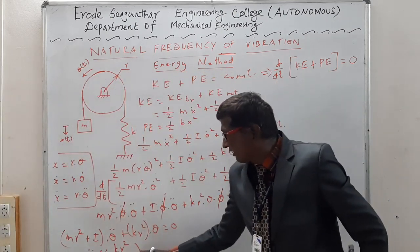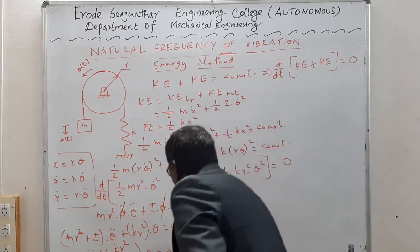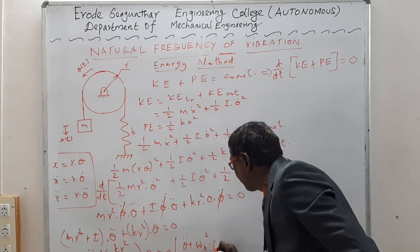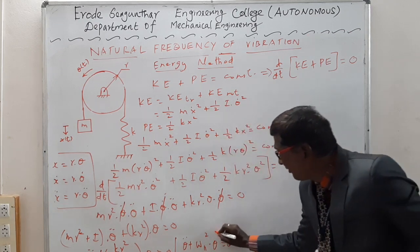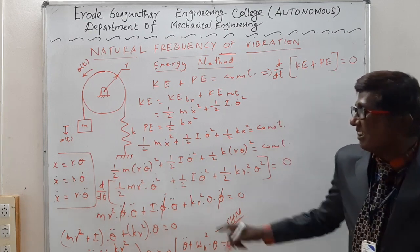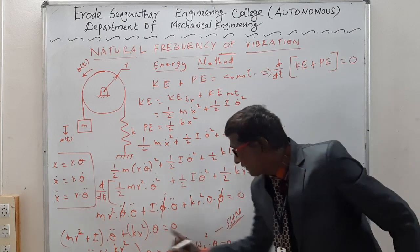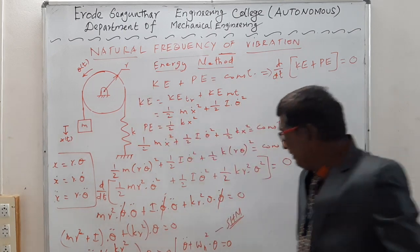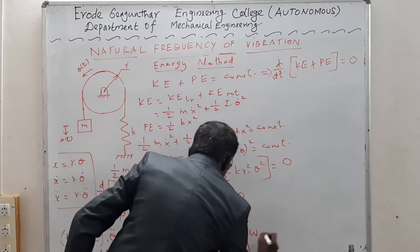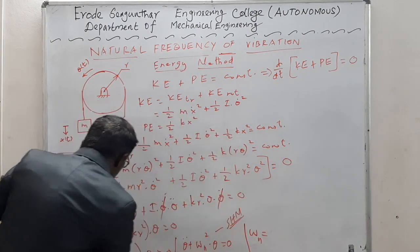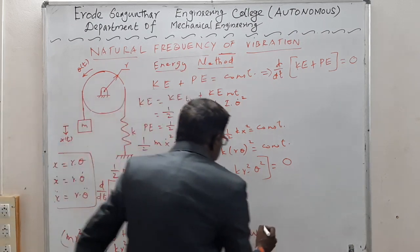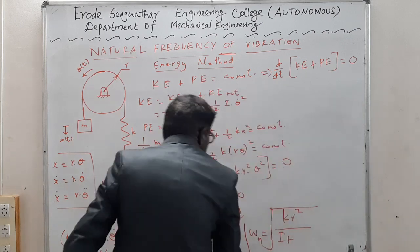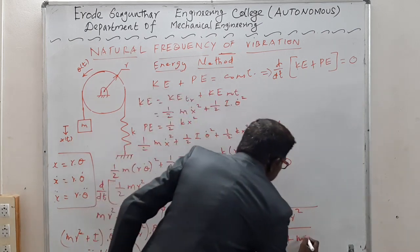Now the equation resembles the governing equation of simple harmonic motion. The governing equation for simple harmonic motion is θ̈ + ωn²·θ = 0. By direct comparison between the general SHM equation and the equation of motion obtained for the spring-mass-pulley system, we can figure out that ωn² = kr²/(I + mr²). Therefore, ωn equals the square root of kr²/(I + mr²).